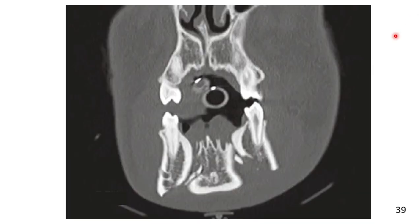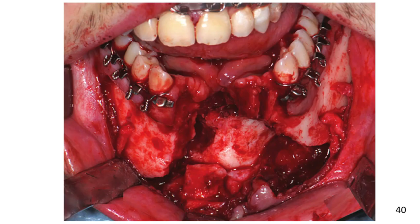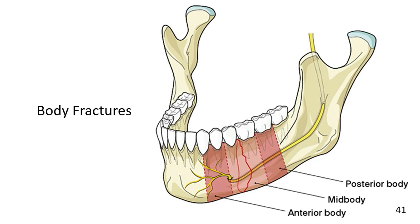This image shows an axial CT view of a comminuted symphysial fracture. This image shows a coronal CT view of the same case — here you can see a shattered area of the fracture. This is a clinical photograph of the same case.